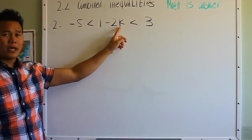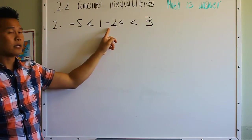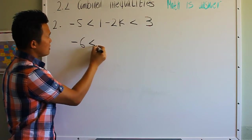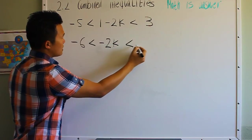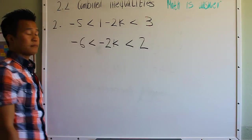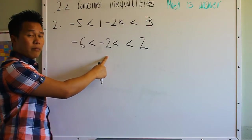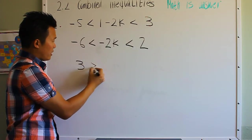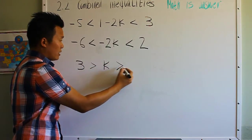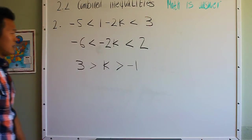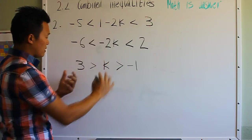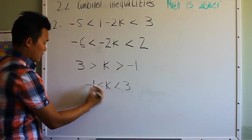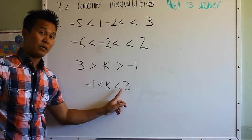We solve for k by removing the 1 and the negative 2 in front of k. Subtract 1 from both sides: 6 less than negative 2k less than 2. Then divide both sides by negative 2 — remember to flip your inequality when dividing by a negative. This becomes 3 greater than k greater than negative 1. Any k value that lies between negative 1 and 3 satisfies that inequality.